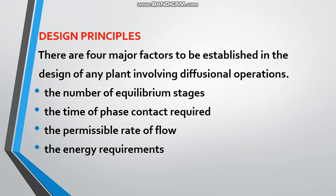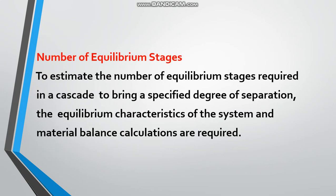Next are the design principles. We have to consider four major factors in the design of any plant involving diffusional operations: the number of equilibrium stages, the time of phase contact required, the permissible rate of flow, and the energy requirements. To estimate the number of equilibrium stages required in a cascade to get a specified degree of separation, the equilibrium characteristics of the system should be known and material balance calculations are required.